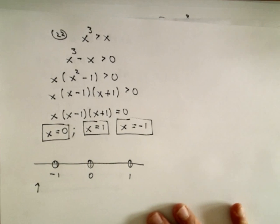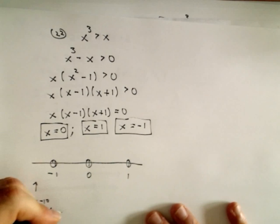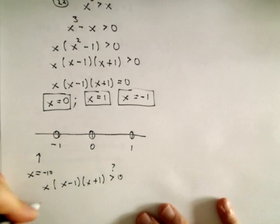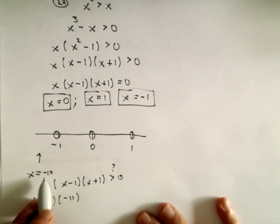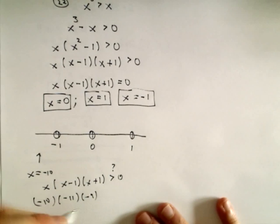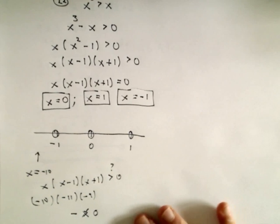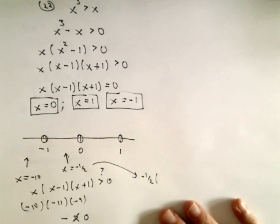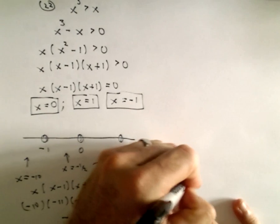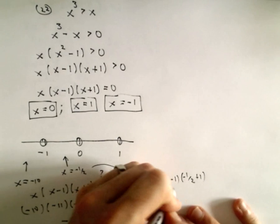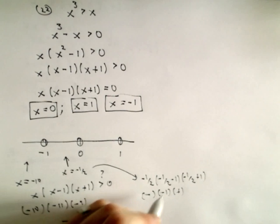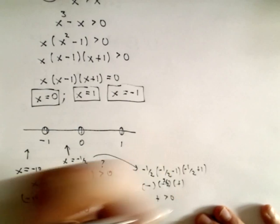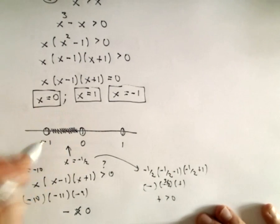I'm going to go through this one a little bit quicker. Using x equals negative 10 in the factored form — I'm asking myself, is it greater than 0? We'd have negative 10, negative 10 minus 1 is negative 11, negative 10 plus 1 is negative 9. A negative times a negative times a negative is negative — that's not greater than 0. Using x equals negative one half: we'll have negative one half, negative one half minus 1, and negative one half plus 1. That's a negative times a negative times a positive, which is positive — and a positive number is certainly greater than 0. So values between negative 1 and 0 work.